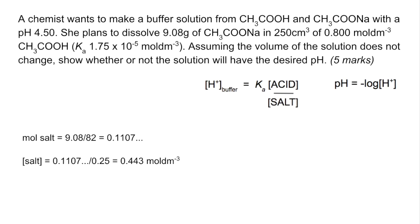It's quite straightforward now. So we just put that into the cacid over salt expression and that comes out at an H⁺ concentration of 3.16 times 10 to the minus 5. We're going to minus log that and out comes a pH of 4.50. And so yes, it's going to have the desired pH.